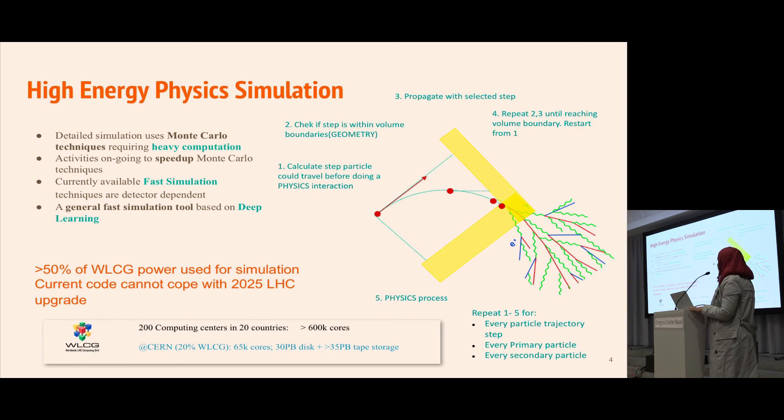Looking at WLCG, there are 200 computing centers in 20 countries with 600K cores, and more than 50% of these resources are used for simulation. In 2025 we're having an upgrade, so the data will be even more granular.